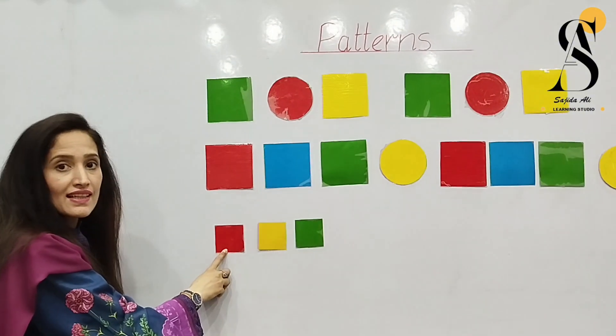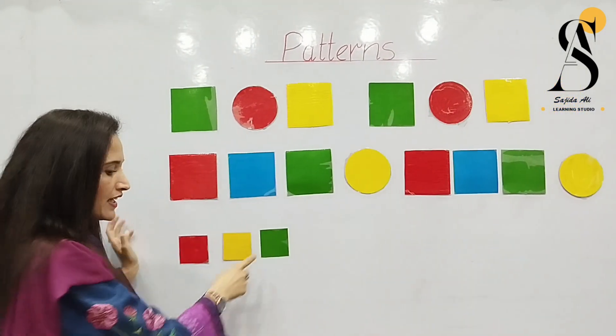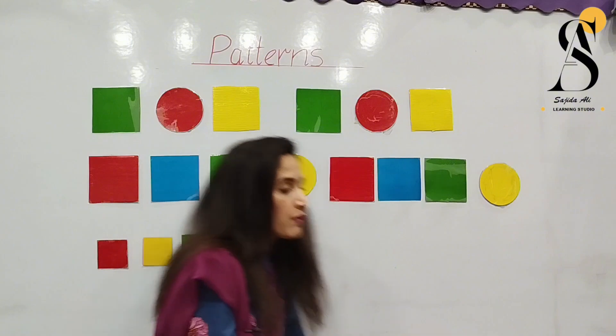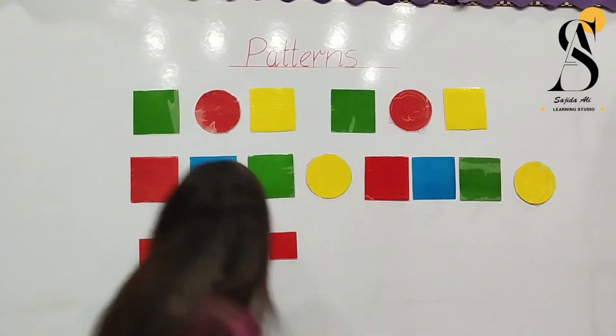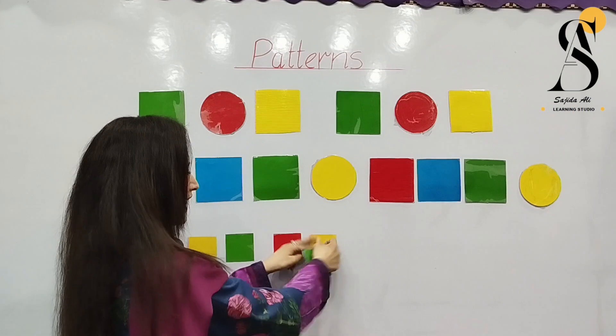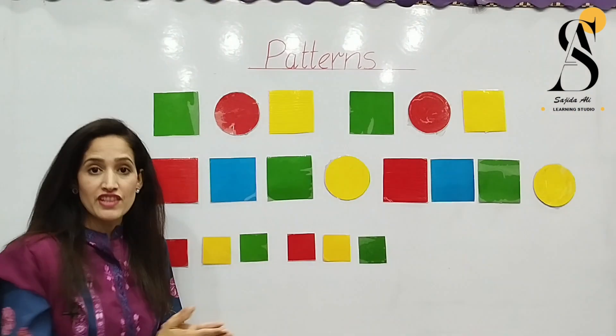We have here a red square, yellow square and green square. What will come next? Yes, red one will come next. We will place it here. Then the next one will be a yellow and this is the green. So we have completed the pattern.